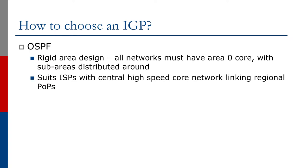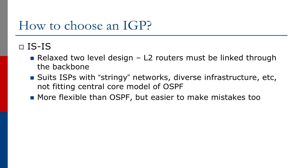So how do we go about choosing an IGP? OSPF has a rigid area design — all networks must have an area zero core with sub-areas distributed roundabout, and it suits ISPs with a central high-speed core network linking regional POPs. As for IS-IS, it has a relaxed two-level design. L2 routers must be linked through the backbone, and it suits ISPs with so-called stringy networks, diverse infrastructure, not really fitting the central core model used by OSPF.